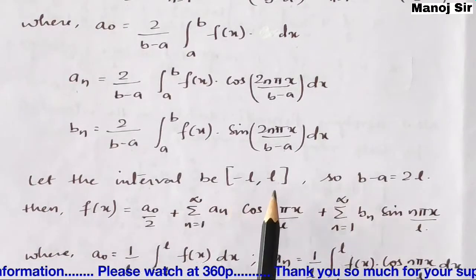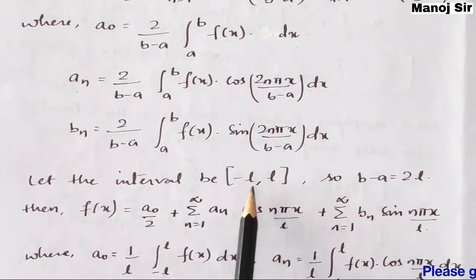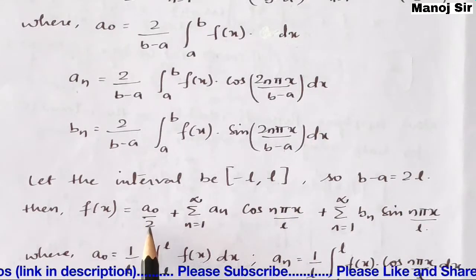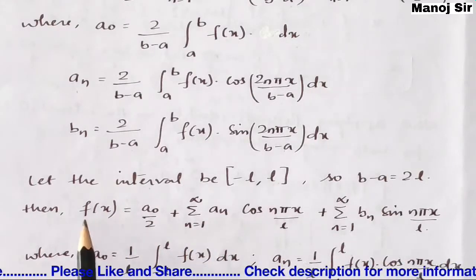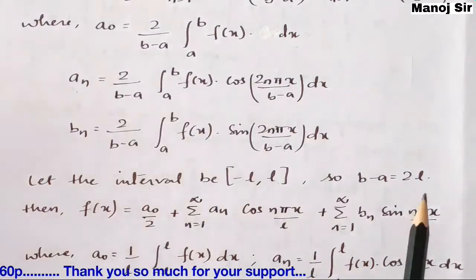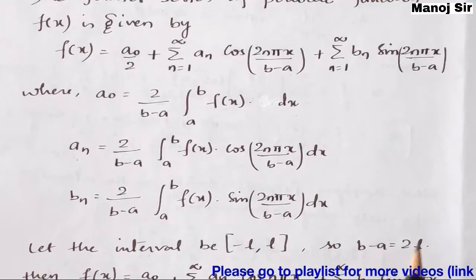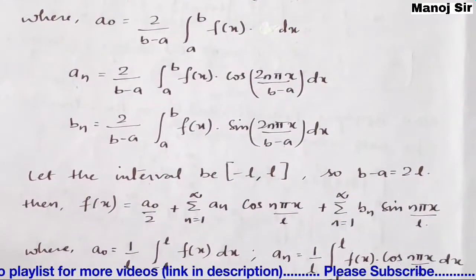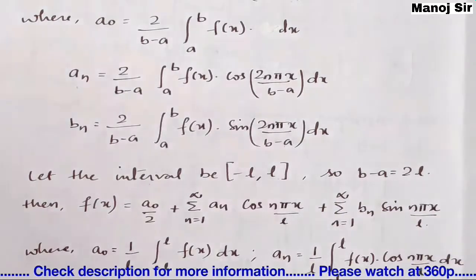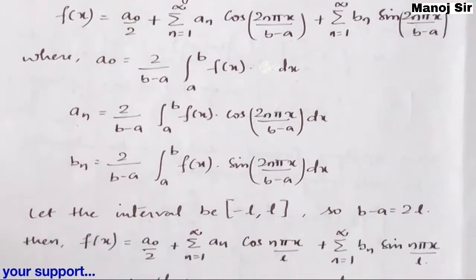Let's say the interval is −l to l, so a = −l and b = l, giving b−a = l−(−l) = 2l. In that case the Fourier series for f(x) on [−l, l] becomes: f(x) = a₀/2 + summation n=1 to infinity of aₙ cos(nπx/l) + summation n=1 to infinity of bₙ sin(nπx/l), since putting b−a = 2l cancels the 2s in the argument.